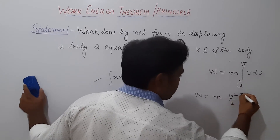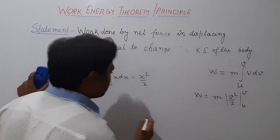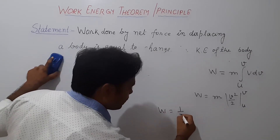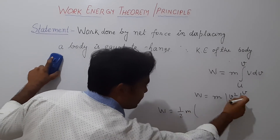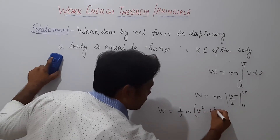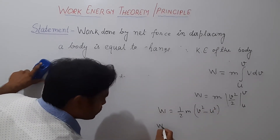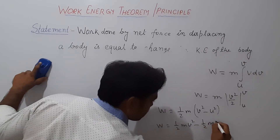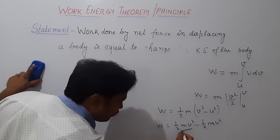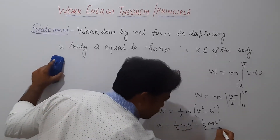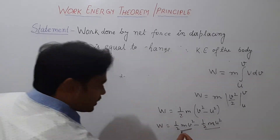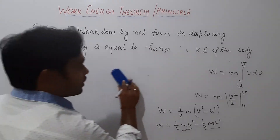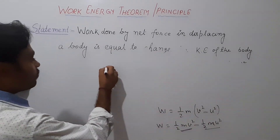We know that the integration of x dx equals x²/2. Using this formula, we can write: work equals M times the integration of v dv, which gives v²/2, with limits from U to V. We can write this work equals (1/2)M times [V² minus U²]. So work equals (1/2)MV² minus (1/2)MU². We know that (1/2)MV² is kinetic energy, and this is also kinetic energy. U is the initial velocity.